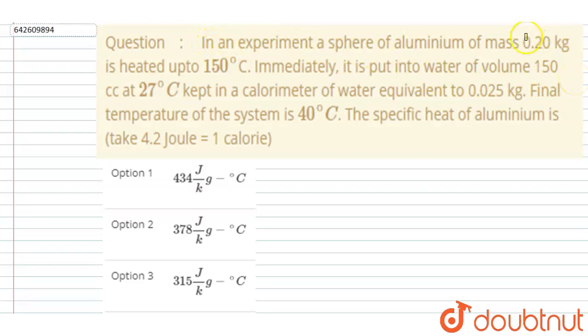A sphere of aluminum of mass 0.2 kg is heated up to 150 degrees Celsius. It is put into water of volume 150 cc at 27 degrees Celsius.